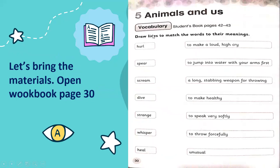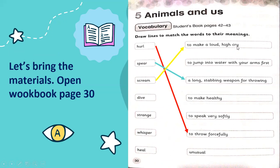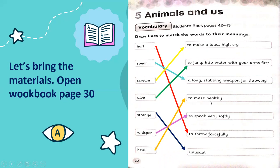After you're done, go over to the workbook page 30. It says: draw lines to match the words to their meanings. 'Crawl' means to throw forcefully. 'Spear' means a long stabbing weapon. 'Scream' means to make a loud high cry. 'Dive' means to jump into the water with your arms first. 'Strange' means unusual. 'Whisper' means to speak softly. And 'heal' means to make healthy.